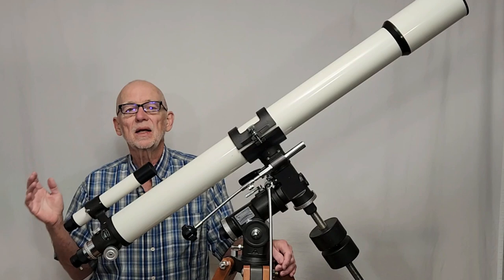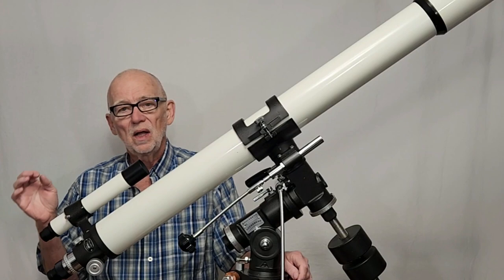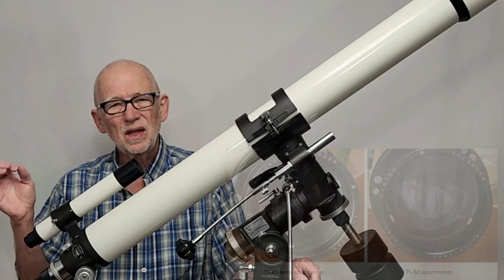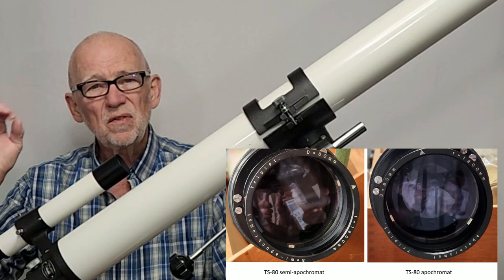I compared them with a 4-inch ED apo, F9, stopped down to 80 millimeters. So they're approximately the same telescope at that point. And I saw identically the same images. So everything, to me, looks like the apo and the semi-apo are effectively perfect telescopes. The very subtle color difference was only visible in the out-of-focus diffraction patterns.